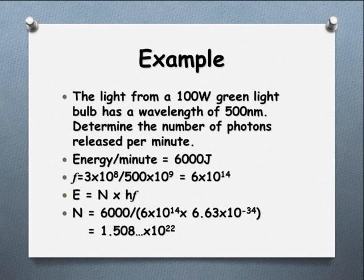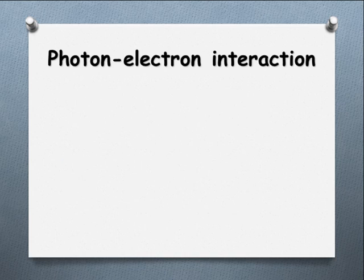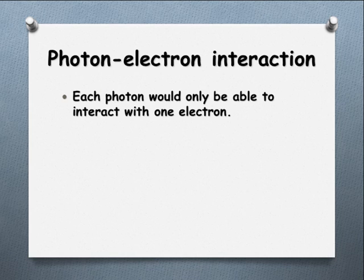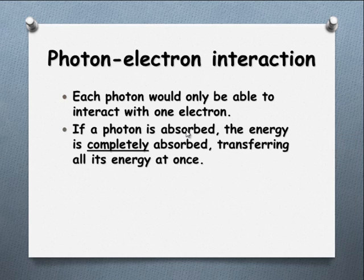To link this into the photoelectric effect, just to give us a step into the next screencast, the idea that Planck was working on is that each photon would only be able to interact with one electron. And in doing so, if it is absorbed, all of that energy gets absorbed. So all of the energy gets transferred. It can't just give off part of its energy. This is a majorly important concept to explaining the photoelectric effect. So lock that one into your memory.